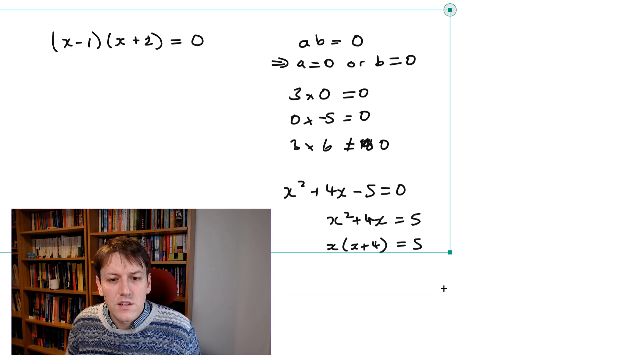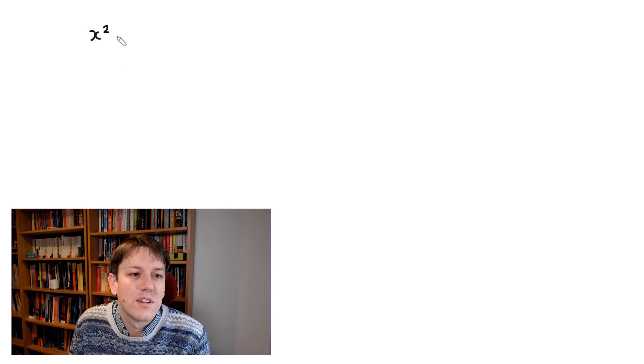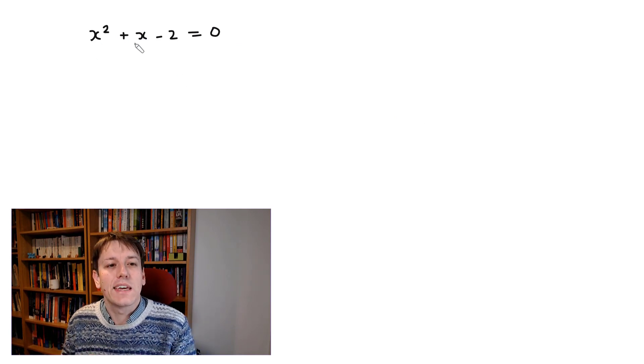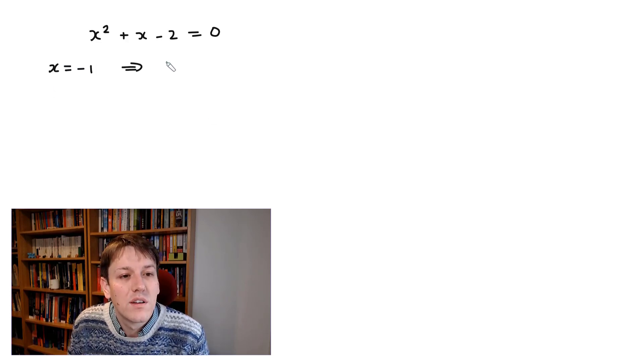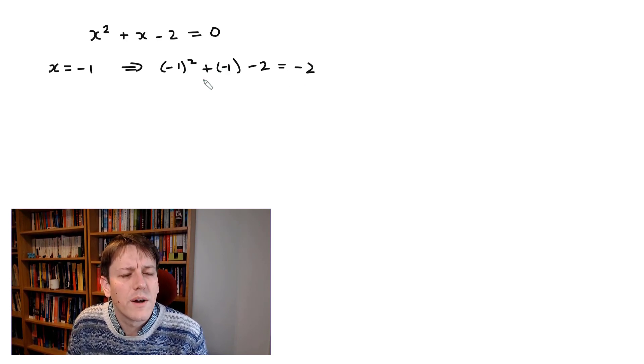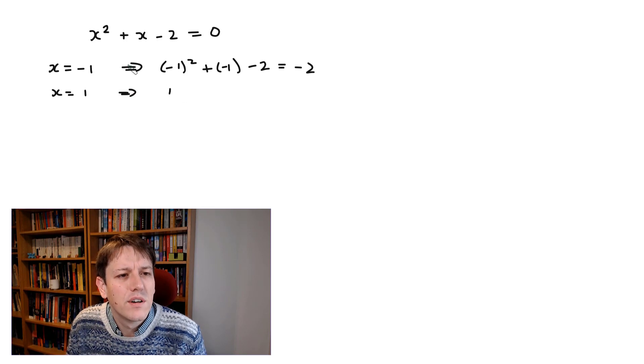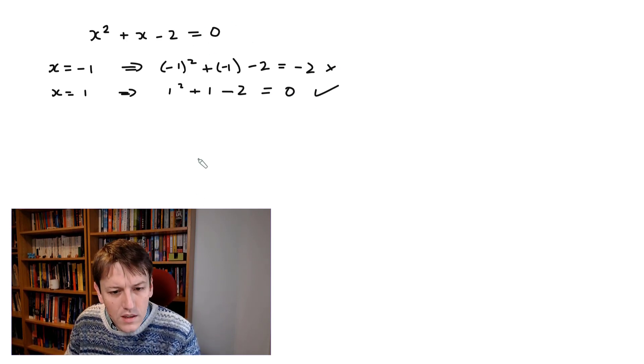And then maybe they try to factorise this, and they try to make some argument about x(x + 4) = 5. This just doesn't work, because there's nothing we can say particularly special about two numbers that multiply together to give 5, like there is about two numbers that multiply together to give 0. So if I've got the equation, let's take the equation x² + x - 2 = 0. What it means to solve the equation is to find a value of x that makes this equation work. For example, if I put in x = -1, then that means that (-1)² + (-1) - 2, that gives me 1 - 1 - 2, so that doesn't give me 0, so x = -1 is not a solution to the equation.